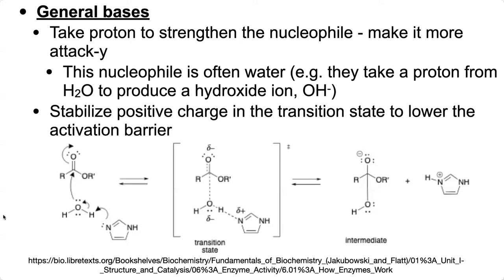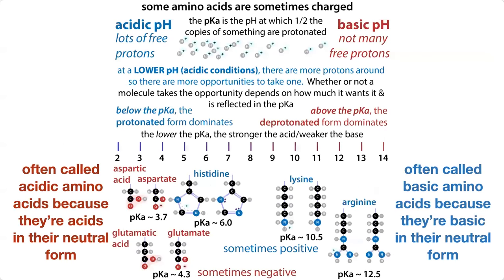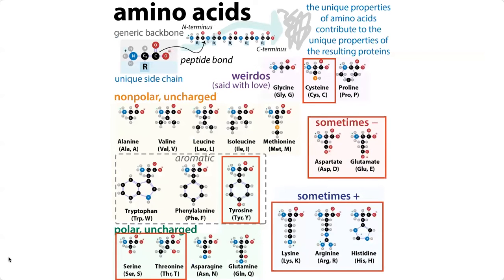General acids and bases are found in a lot of different amino acids — not just our acidic or basic amino acids. We're also talking about things with a hydroxyl group: tyrosine, serine, threonine. We're talking about the thiol group: cysteine. And when we talk about the acidic aspartate and glutamate, or basic lysine, arginine, and histidine, remember that 'acidic' and 'basic' only refers to how they act in their neutral form, but they're able to act as both general acids and general bases.